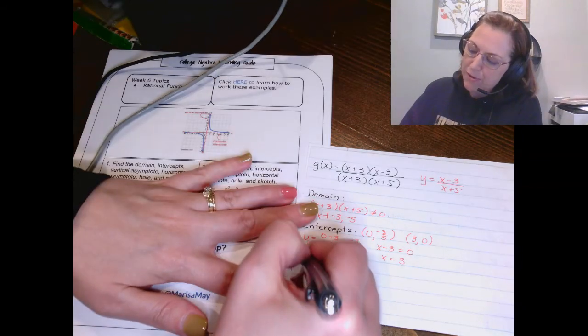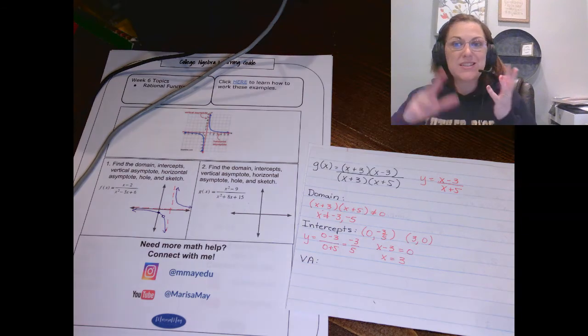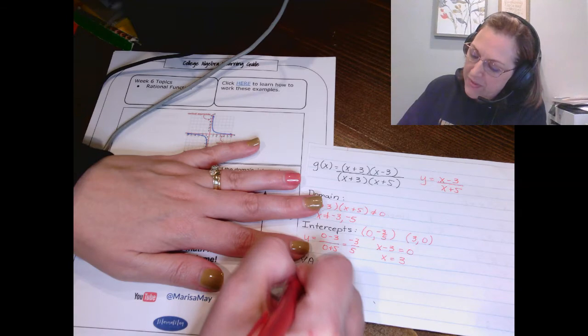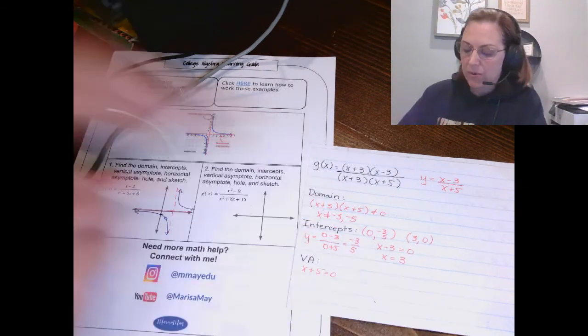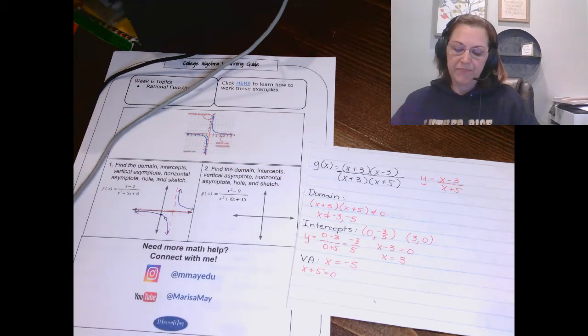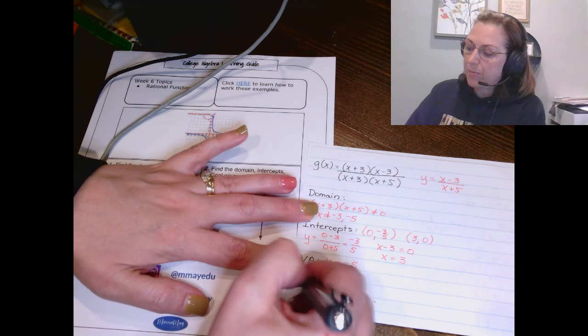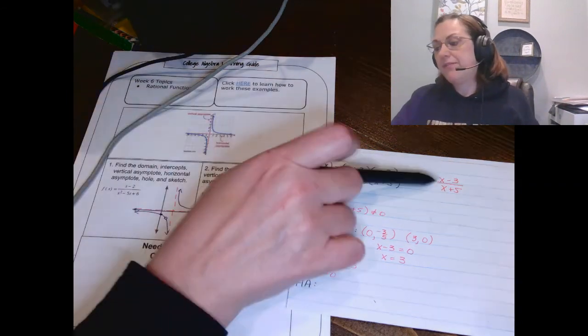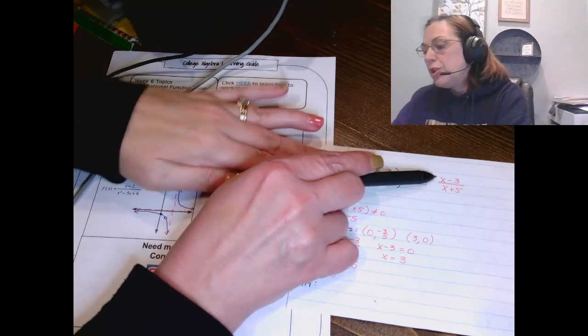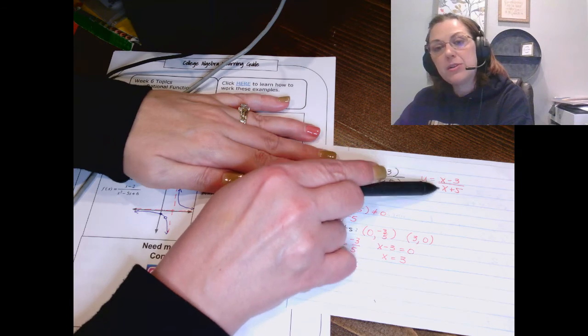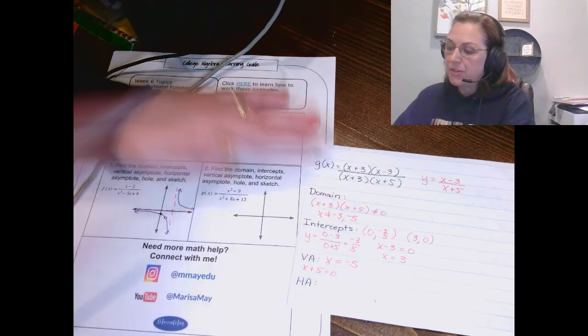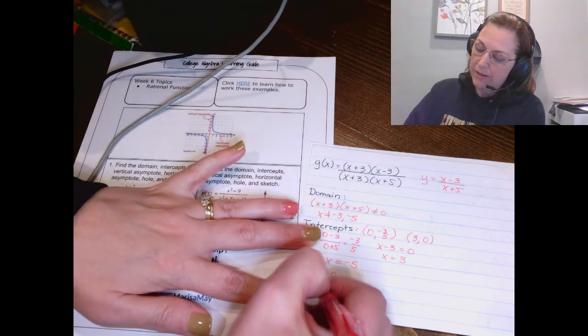Next part, vertical asymptotes. Vertical asymptote is simplified function. Denominator set equal to 0. So I've got x plus 5 equals 0. So I know my vertical asymptote is x equals negative 5. Horizontal asymptote. So notice in this simplified function, your highest power of x is in the top and the bottom. When that happens, you take the two numbers in front of those highest powers and divide them. There's not one written, so it's understood to be a 1 and a 1. So our horizontal asymptote is at y equals 1.